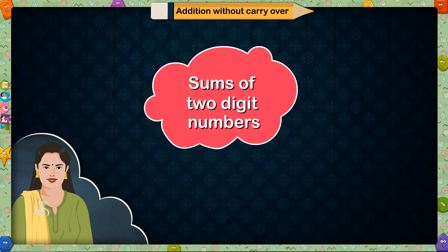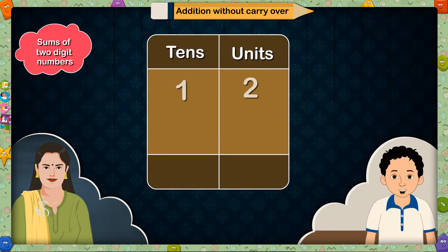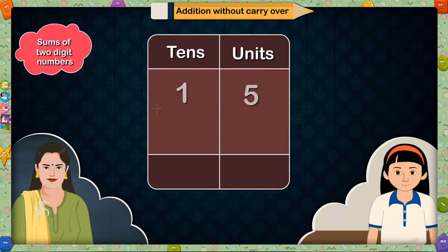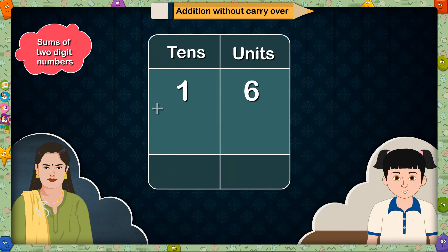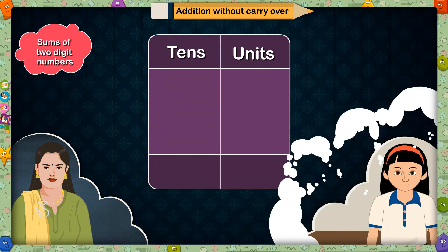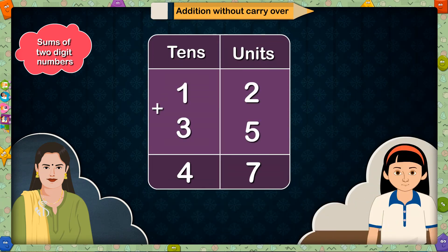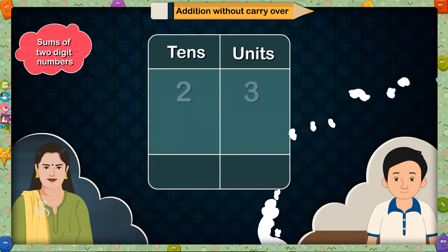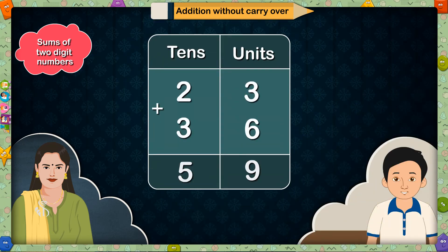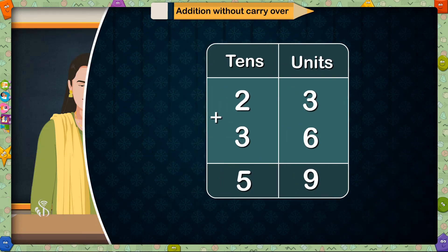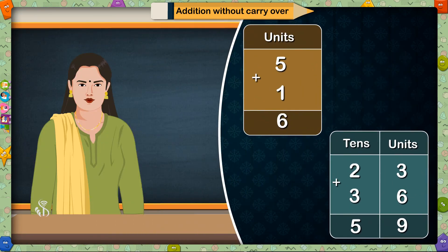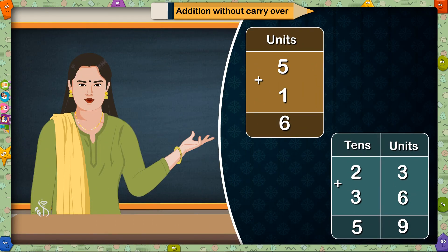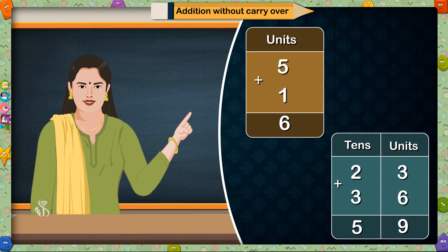Now tell me sums of two-digit numbers. 12 plus 13 is equal to 25. 15 plus 14 is equal to 29. 16 plus 23 is equal to 39. 12 plus 35 is equal to 47. 23 plus 36 is equal to 59. Well done! Now you can prepare and solve addition sums of single-digit numbers as well as two-digit numbers.